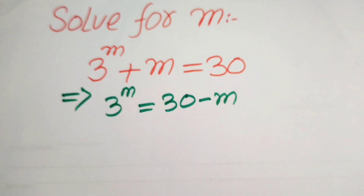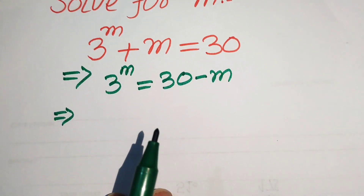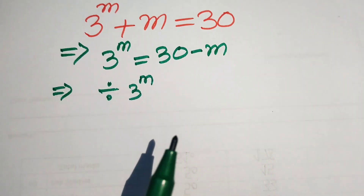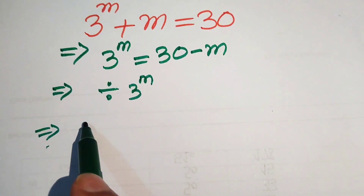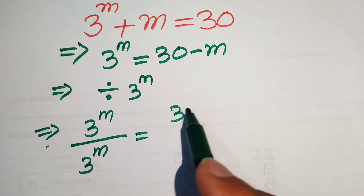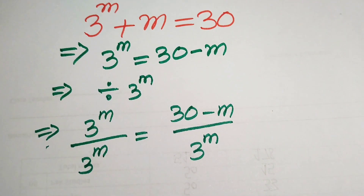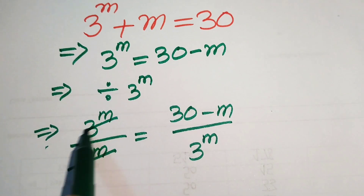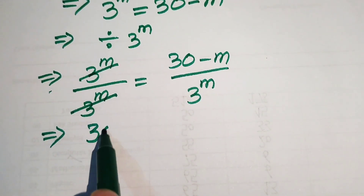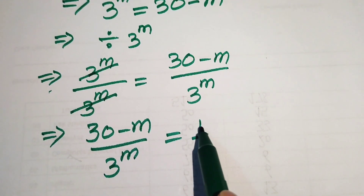Now in the next step we divide both sides by 3 to the power of m. So 3 to the power of m divided by 3 to the power of m equals 30 minus m divided by 3 to the power of m. These cancel each other and we get 30 minus m divided by 3 to the power of m equals 1.